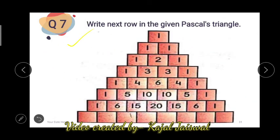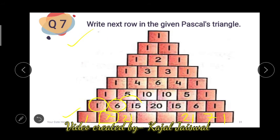Question: write the next row in the given Pascal's triangle. The first and last entries are always 1. For the next entry: 1 and 6 add to 7, which appears twice. Then 6 and 15 add to 21, which also appears twice. Then 15 and 20 add to 35, which appears twice. So the next row is 1, 7, 21, 35, 35, 21, 7, 1.